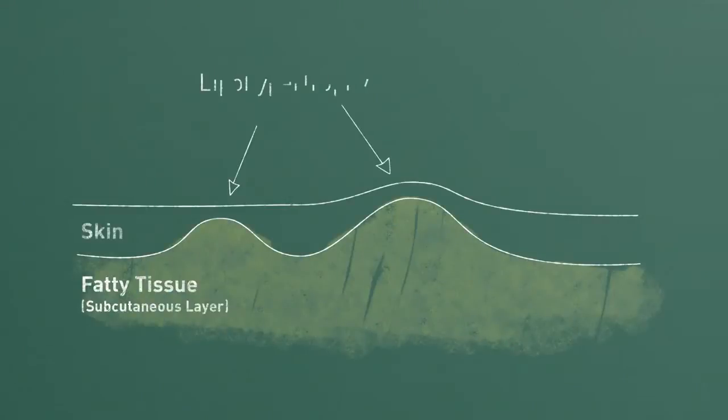It's really important to rotate your injection sites — it's one of the most important things about proper injection technique. Not rotating your injection sites can lead to a problem known as lipohypertrophy. When people use the same site over and over again, they develop a buildup of fatty tissue under the skin at that site. The problem with lipohypertrophy is that injecting into that area again, your insulin isn't absorbed the way that it should be, and that can lead to ups and downs in your blood sugars.